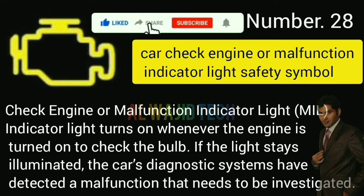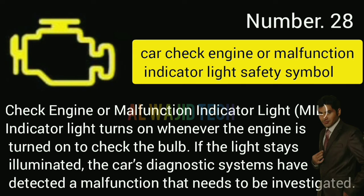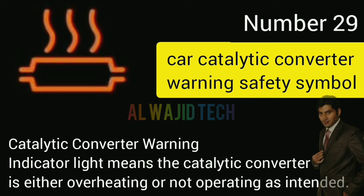Number twenty-eight: Car check engine or malfunction indicator light. The check engine or malfunction indicator turns on whenever the engine is started to check the bulb. If the light stays illuminated, the car's diagnostic system has detected a malfunction that needs to be investigated.